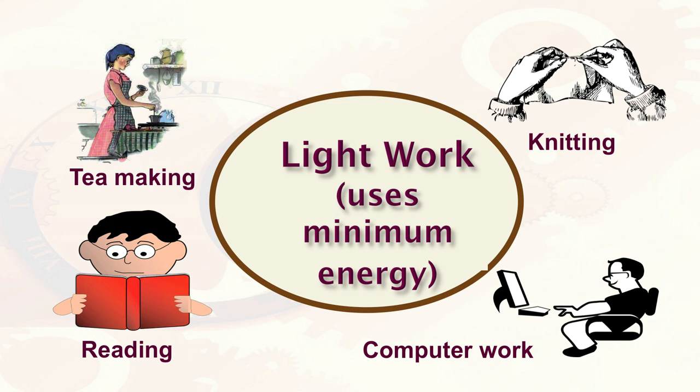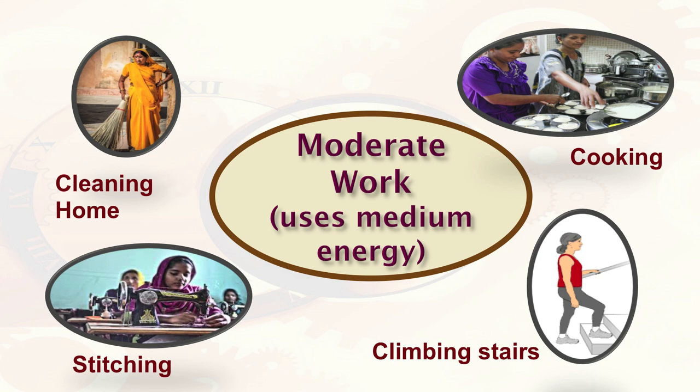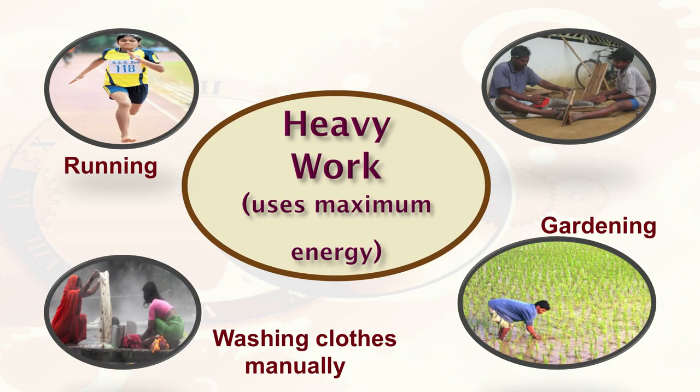Light work uses minimum energy — for example, cutting vegetables, dusting, writing, reading, knitting, etc. Moderate activities use medium energy — for example, cooking, cleaning utensils, cleaning other areas of the house, sweeping, dusting, stitching, etc. Heavy work uses maximum energy — for example, mopping the floor, washing clothes manually, running, climbing stairs, gardening, etc.